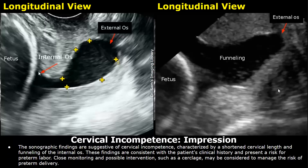Impression: the sonographic findings are suggestive of cervical incompetence, characterized by a shortened cervical length and funneling of the internal os. These findings are consistent with the patient's clinical history and present a risk for preterm labor. Close monitoring and possible intervention such as a cerclage may be considered to manage the risk of preterm delivery.